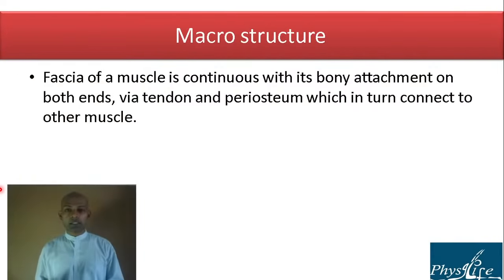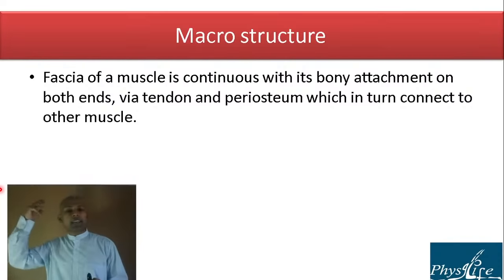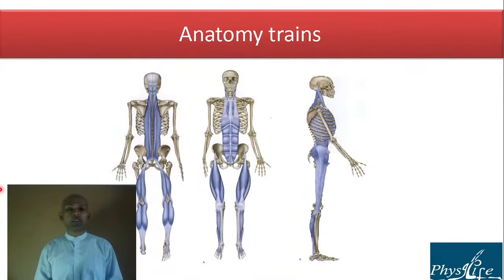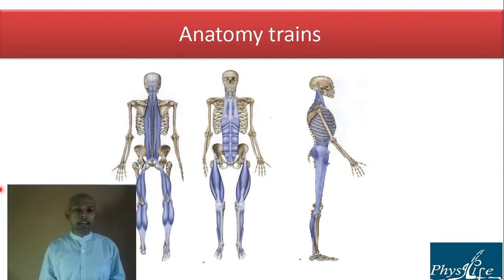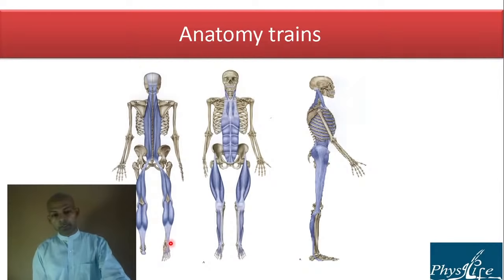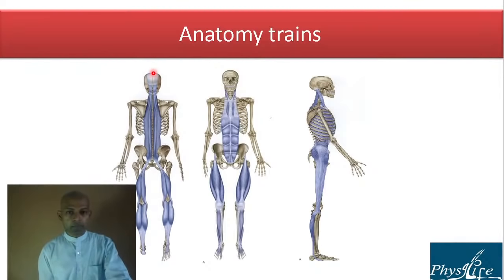Now looking at the macrostructure of myofascia: it is proposed that the fascia of a muscle is continuous with its bony attachments on both ends via tendon and periosteum. This leads to the theory that the whole body is connected via fascial chains — Tom Myers calls them anatomy trains. For example, the plantar fascia is continuous with the calf muscle via the periosteum of the calcaneum, then to the hamstring, sacrotuberous ligament, erector spinae, and up to the occipital frontalis.